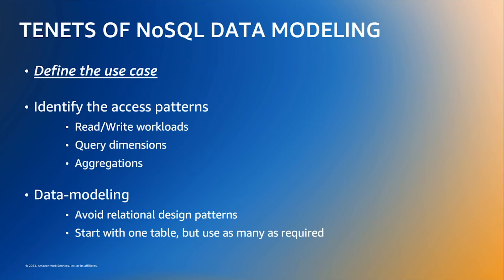On the other side, multiple tables is a pattern more traditional from classic database designs, and it's easier to get your head around the first time you implement it. However, when you use multiple tables you can very easily fall into the trap of modeling SQL in NoSQL. If you need to query data across different tables, your application will need to join the data and retrieve results — what we call an application-level join, which is also considered an anti-pattern.